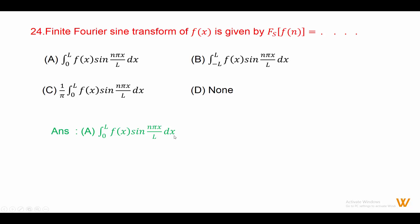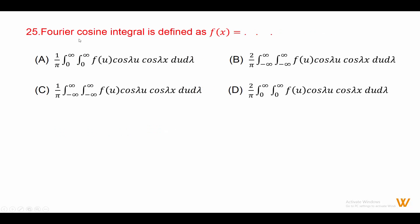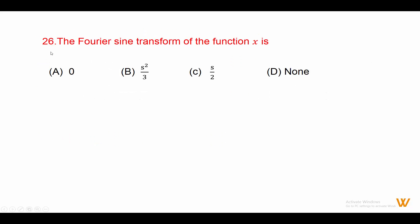Twenty-five: the Fourier cosine integral is defined as fx equals 2 upon pi, integration from 0 to infinity of integration from 0 to infinity of f(u) cos(lambda u) cos(lambda x) du d lambda. Answer is option D.